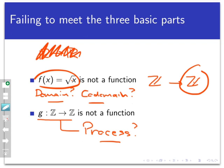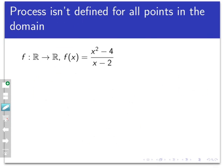Now, suppose you have the domain and codomain and process all specified explicitly. You could still fail to be a function in a couple of ways. One way is that the process isn't defined for all points in the domain. Remember, we said that every valid input from the domain needs to have an output, at least one output, associated to it. And here's an example where I've specified the domain, the real numbers, the codomain, and the process here.